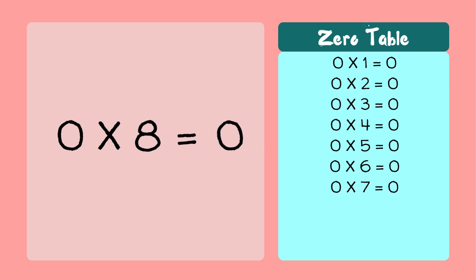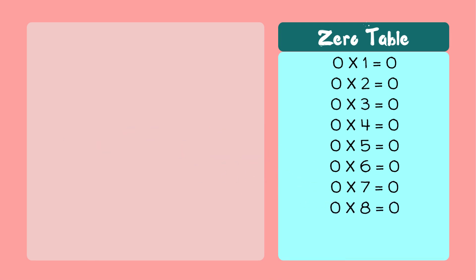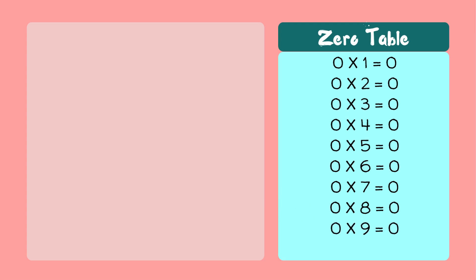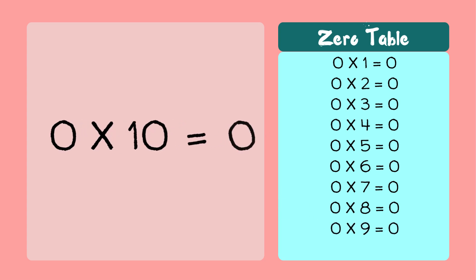Zero seven's a zero. Zero eight's a zero. Zero nine's a zero. And zero ten's a zero.